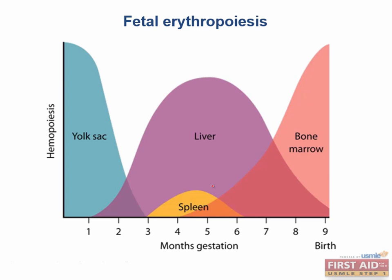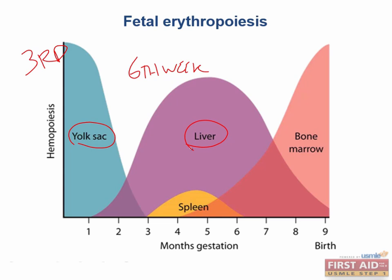Fetal erythropoiesis is a super high yield topic. Erythropoiesis begins in the third week of development when the first blood cells arise in the yolk sac — this site of blood formation is only temporary. By the sixth week, hematopoiesis also begins in the liver, and the liver continues to produce until birth. There is some overlap between periods of erythropoiesis in different organs, so there are two organs producing blood at the same time. Erythropoiesis occurs in the liver from six weeks until birth, but the spleen also contributes from weeks 10 to 28. The bone marrow kicks in from 18 weeks until adulthood.